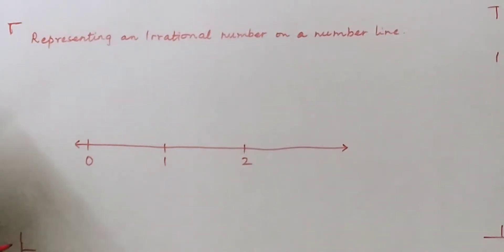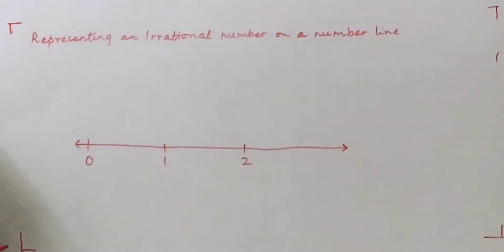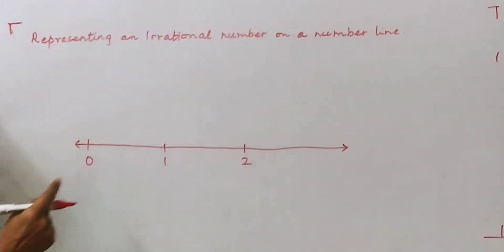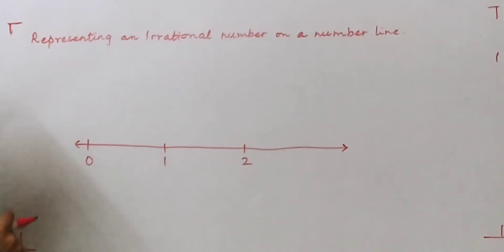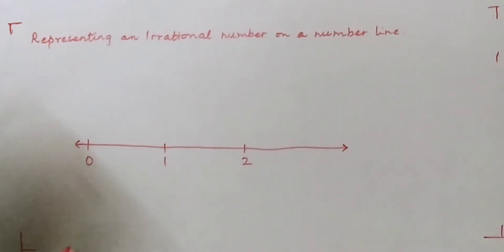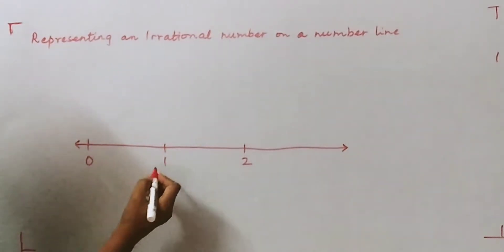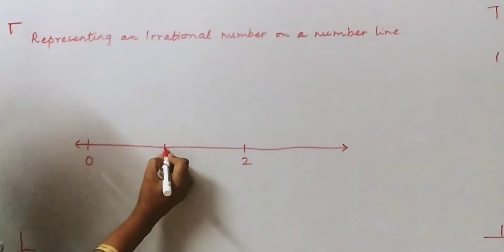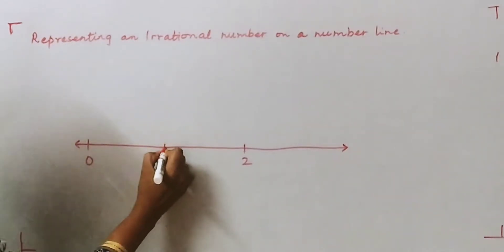Now what we are going to do is use Pythagoras theorem, because in a right triangle the sum of the squares of the two sides is equal to the square on the hypotenuse. So at unit 1 we will begin our construction.